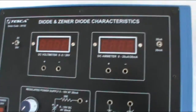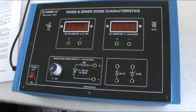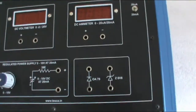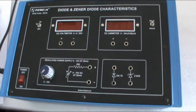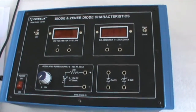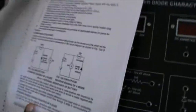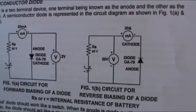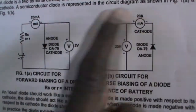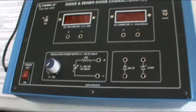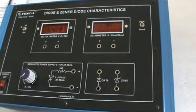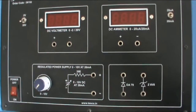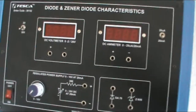Now let's start with Object 1: to study and plot the forward and reverse bias characteristics of a Germanium semiconductor diode. For this, refer to figure 1A. This is the circuit for forward biasing of a diode, and figure 1B is the circuit for reverse biasing. With the help of these circuits we make connections using patch cords, and the procedure is given in the manual. Assemble the circuit of figure 1A.